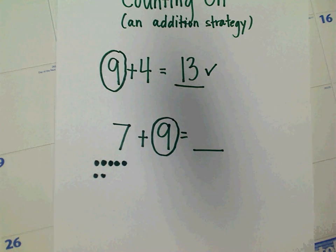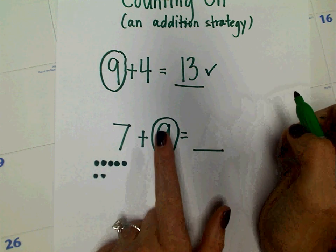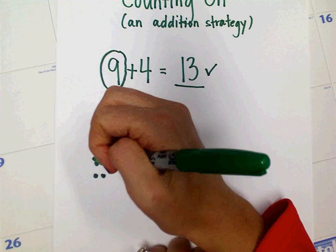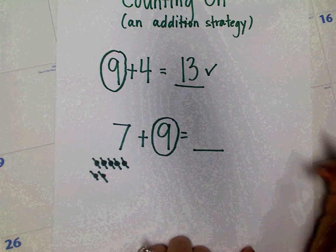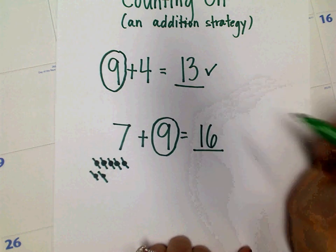Now I am going to count on. I'm going to start by touching 9. 9, 10, 11, 12, 13, 14, 15, 16. So I know that 7 plus 9 equals 16.